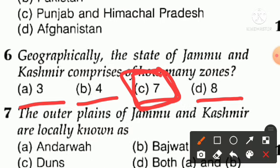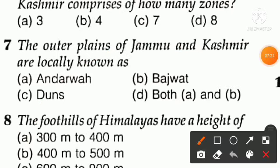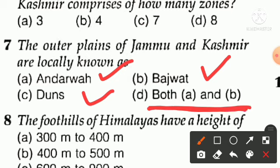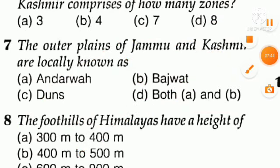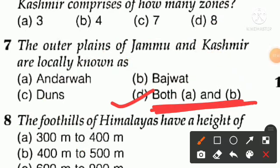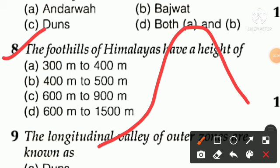Question number seven: the outer plains of Jammu and Kashmir are locally known as what? There are multiple options. The right answer is option D — that is 'both A and B.' The outer plains of Jammu and Kashmir are locally known by both names given in options A and B.